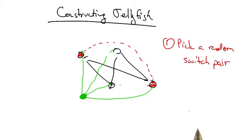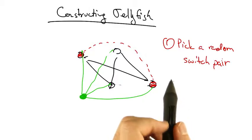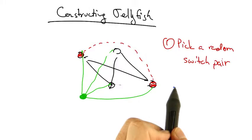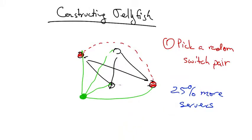For a particular equipment cost, using identical equipment, the jellyfish topology can achieve increased capacity by supporting 25% more servers.